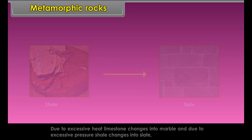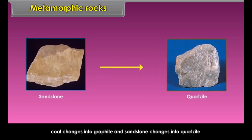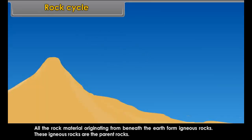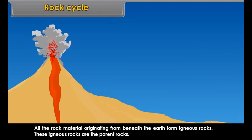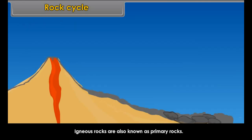Organically formed sedimentary rocks. These rocks are formed by the accumulation of the remnant parts of organisms — plants and animals. Coal, limestone, chalk, etc. are some examples of this type of rock.